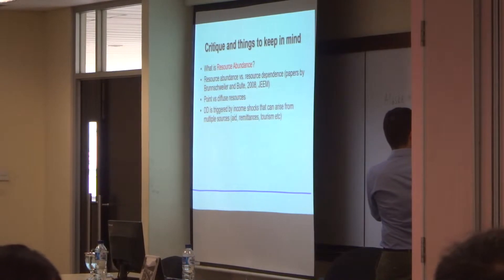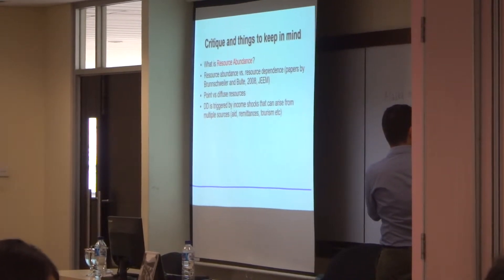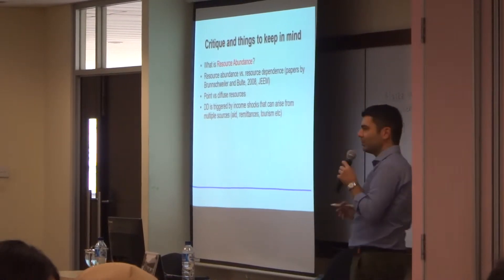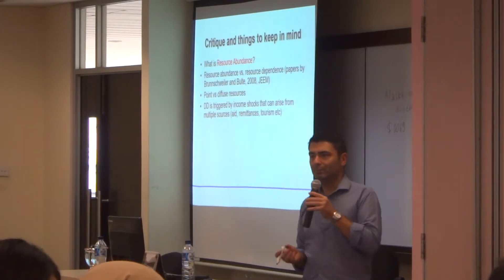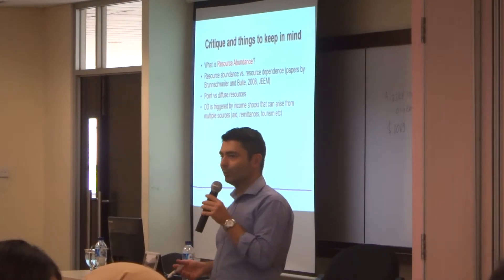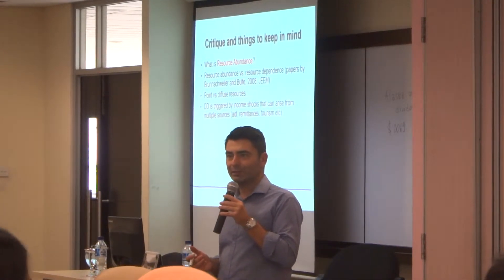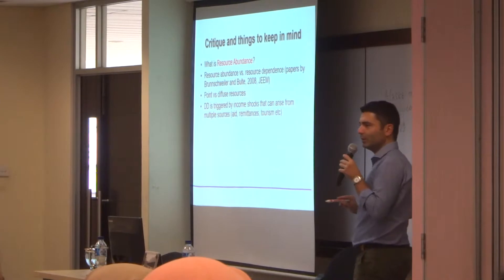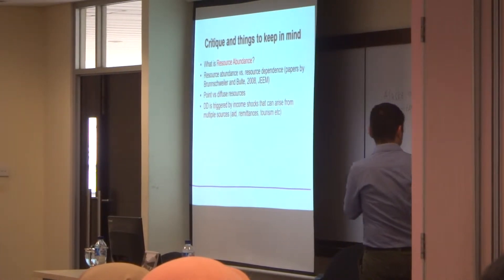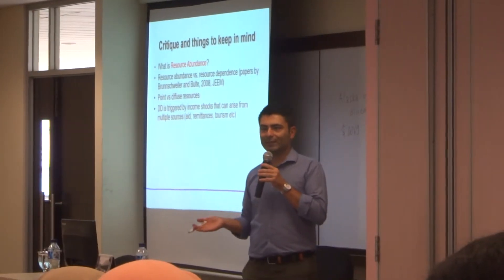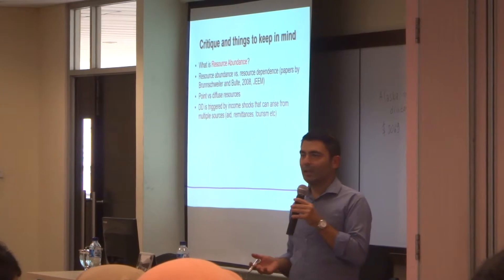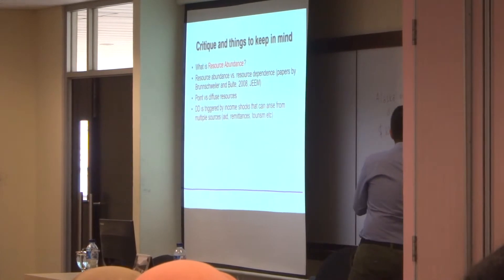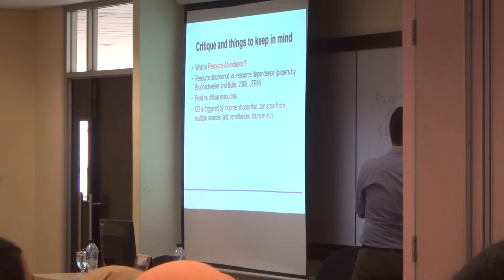When you talk about resource abundance, you express the value of mineral resources in terms of a non-economic variable — one that is less likely to be endogenous or influenced by mineral resources. Because GDP might not be exogenous to the value of minerals. So typically, you divide the value of mineral resources by the population, expressing it in per capita terms, or per square kilometer of surface area.